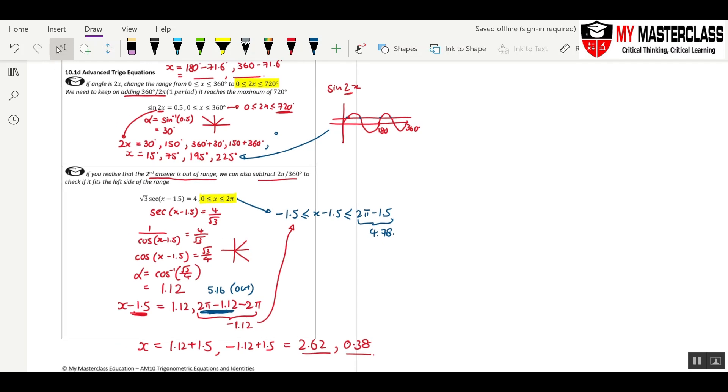And usually when do we minus 360 is when you see the angle is x minus something or 2x minus something. You will realize that you need to have some of the negative angles at the start so that later when your negative 1.5 comes over it will make the whole thing positive.